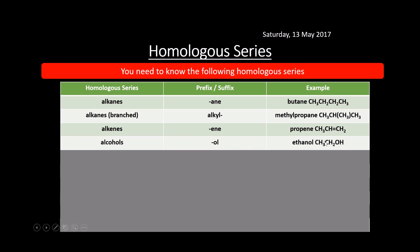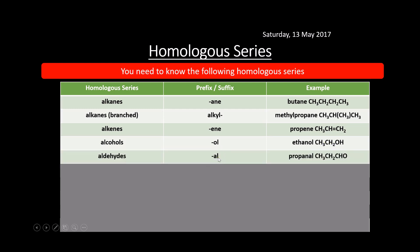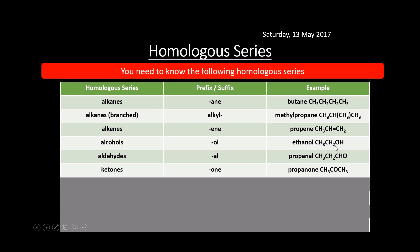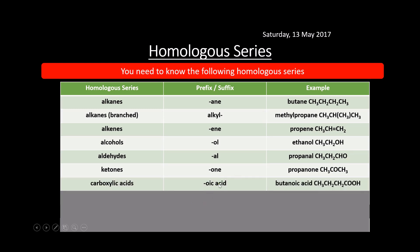Aldehydes end in -al, so for example propanal — you can see the CHO at the end. Ketones end in -one, so there's propanone: CH3COCH3. They have a C=O group; aldehydes have it at the end, ketones in the middle. Carboxylic acids end in -oic acid, for example butanoic acid: CH3CH2CH2COOH. They always end in this COOH group.